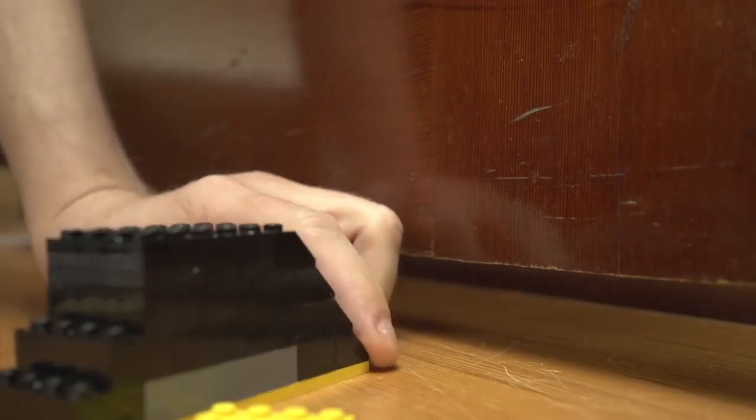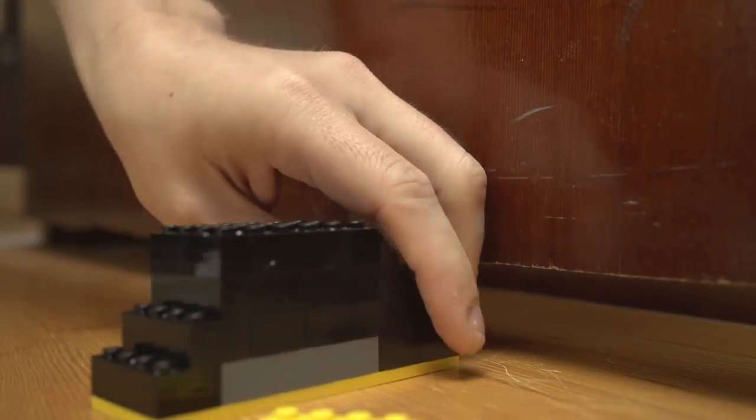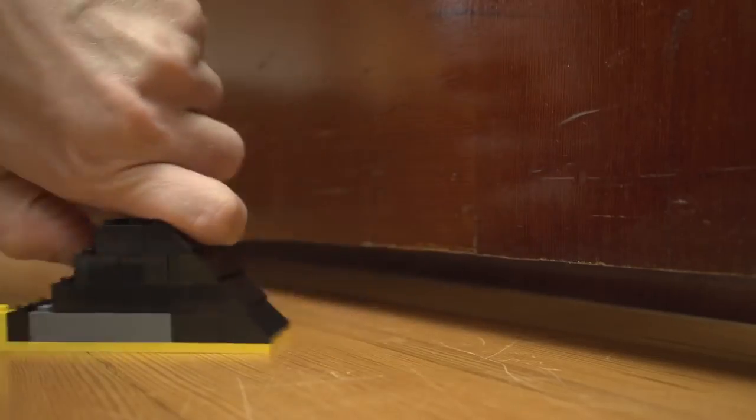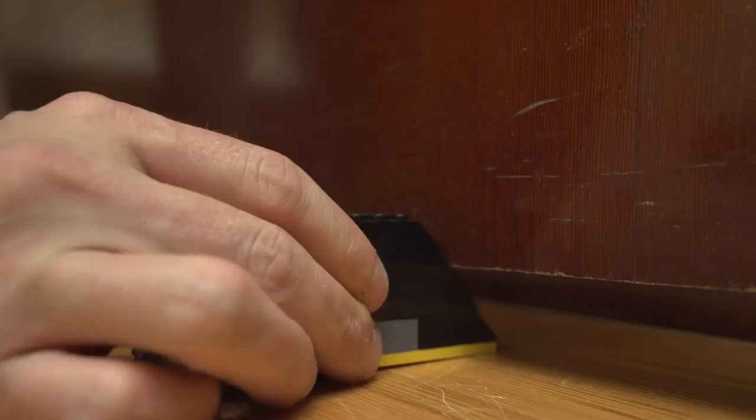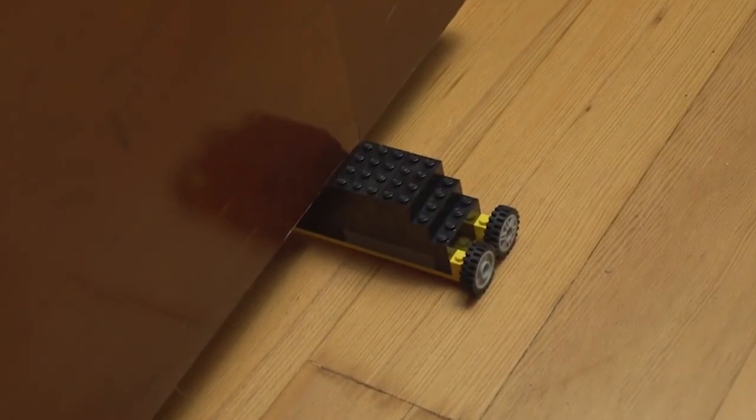You obviously have all kinds of options here, but the idea is to make a simple wedge to stop the hatch. Now if you find it slides around, just wrangle up a LEGO tire or two and slap them right on the back and give it some grit.